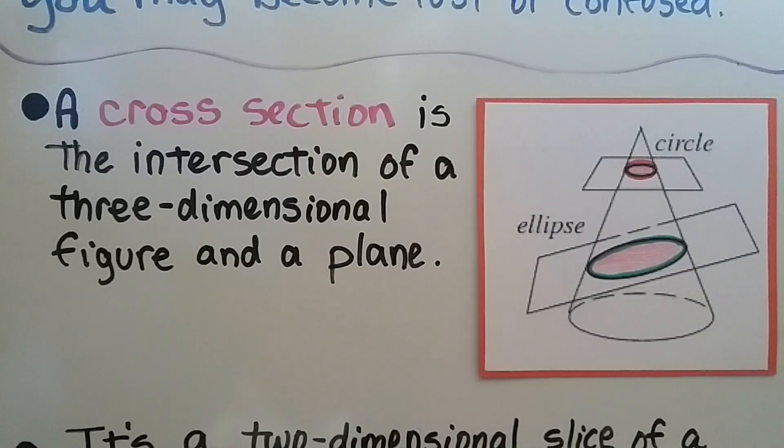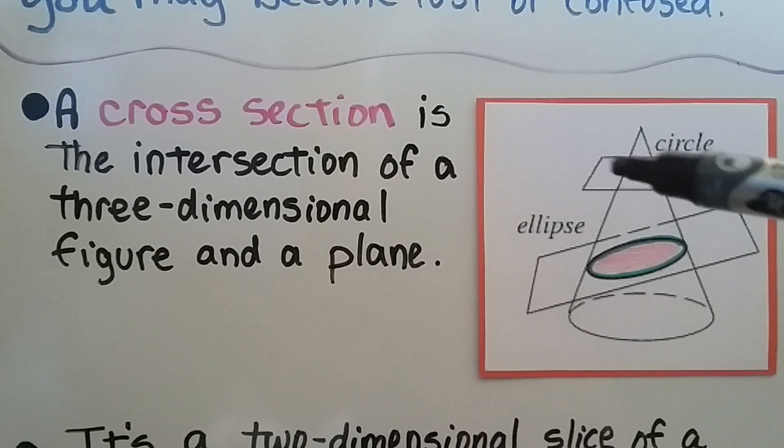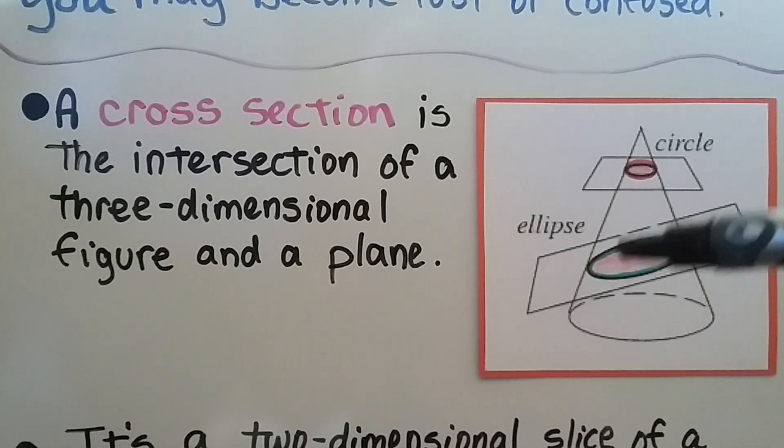A cross section is the intersection of a three-dimensional figure and a plane. So you can see on this cone, we've got a circle here if we go parallel to the base, and if we go on a slant, we'll get an ellipse as a cross section.